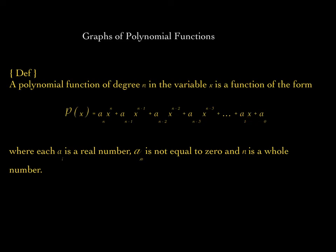Each one of these — a sub n, a sub n minus 1, a sub n minus 2, a sub n minus 3 — we call it a sub i. Each one of those is a real number, so these are real number coefficients. All of your a sub n, a sub n minus 1, a sub n minus 2, and so forth are all real number coefficients.